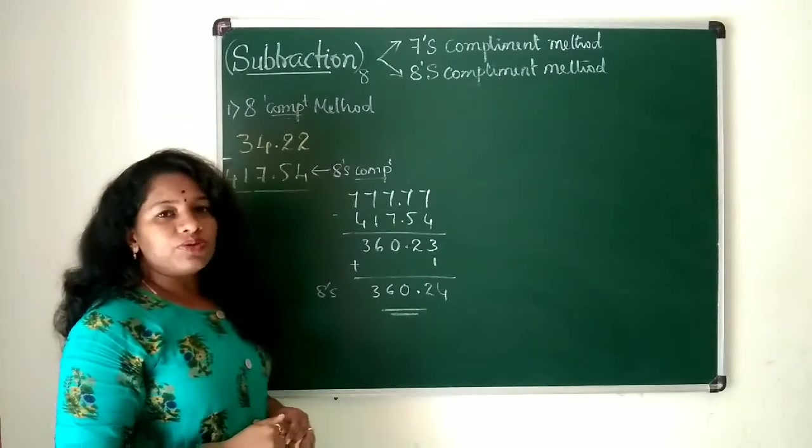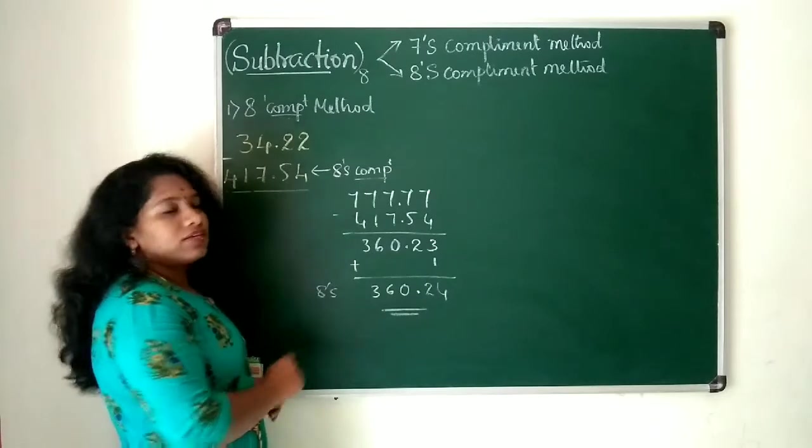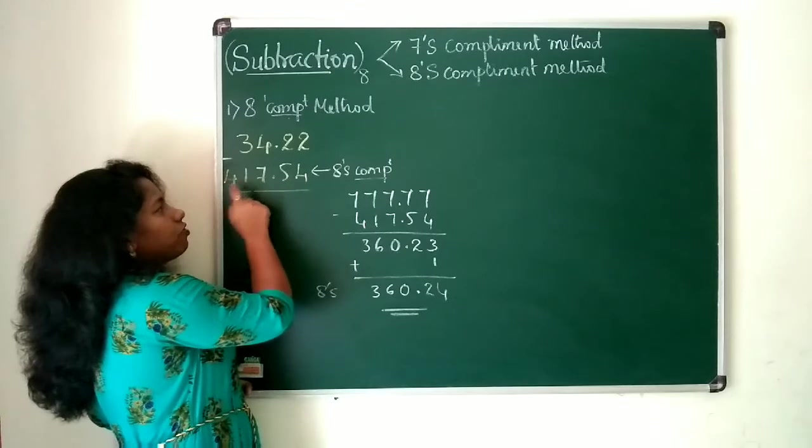Very first what you need to do, you need to take 8's complement for the subtrahend. To take 8's complement you need to count the positions here: 1, 2, 3, 4, 5.